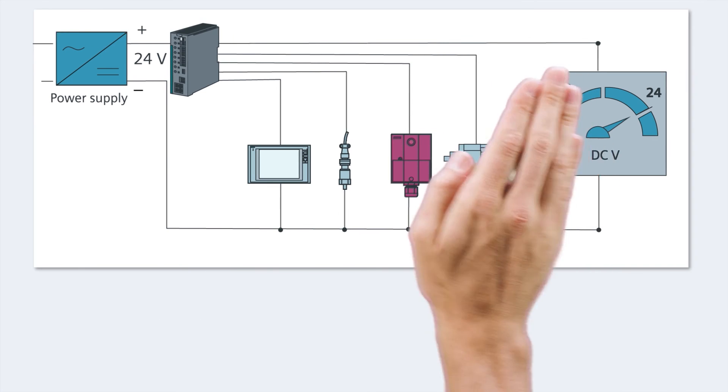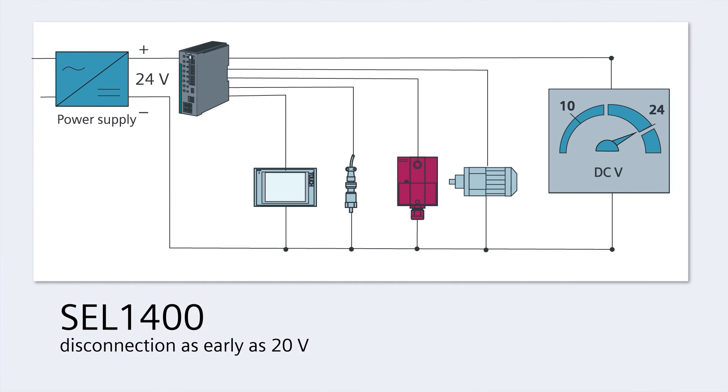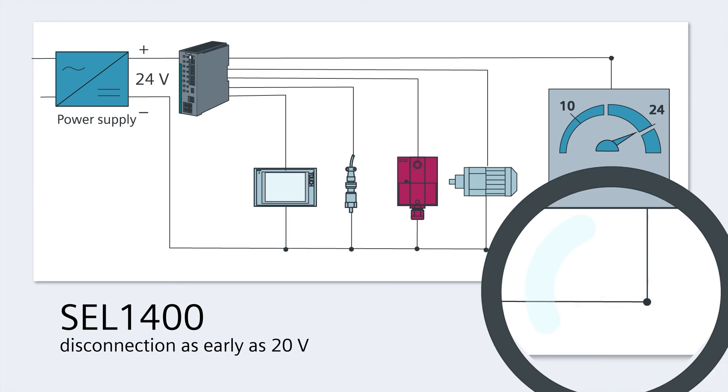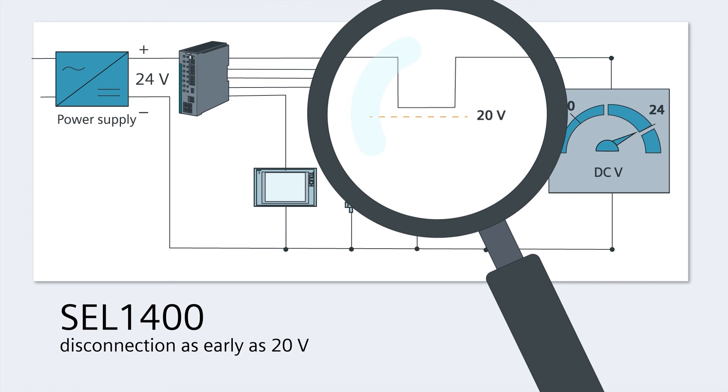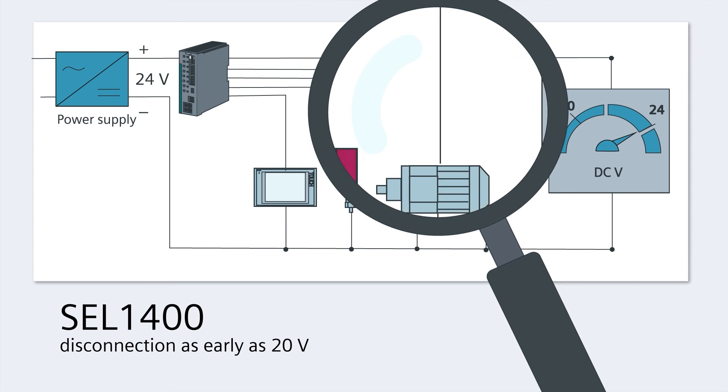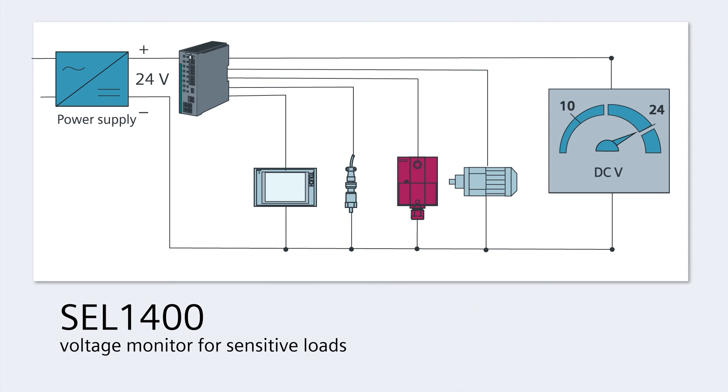An alternative is the SEL1400 with its limiting characteristic that immediately disconnects the relevant output if the voltage dips below 20 volts. The SEL1400 also features voltage monitoring, which can be especially beneficial for loads that don't conform to the PLC standard.